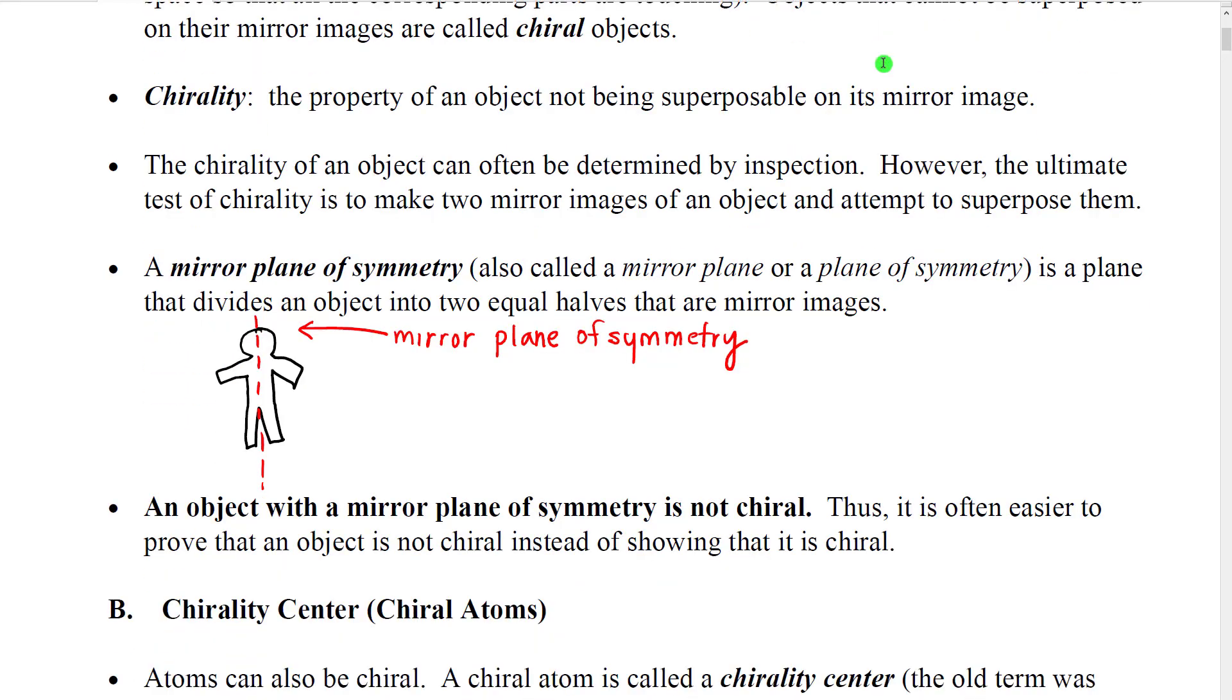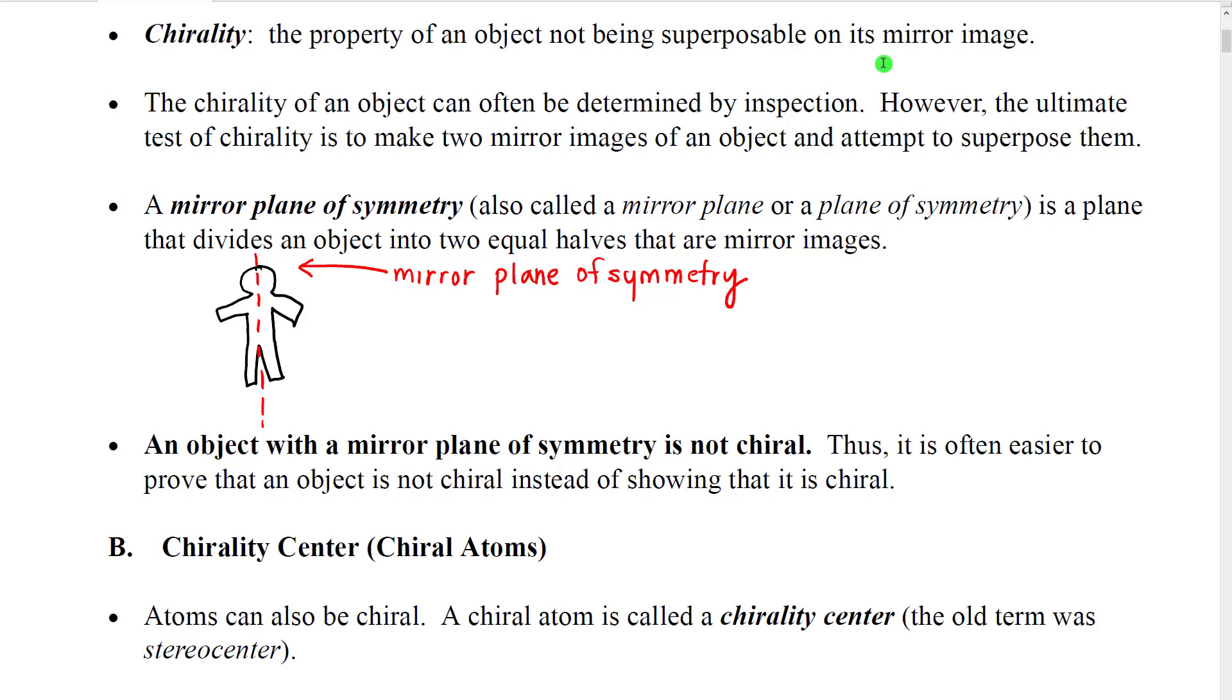There are also ways to test objects to determine if they're not chiral. One way in particular is to look for what's called a mirror plane of symmetry, sometimes also called a mirror plane or just a plane of symmetry. A mirror plane of symmetry is a plane that divides an object into two equivalent halves that are mirror images.